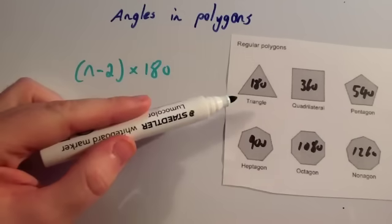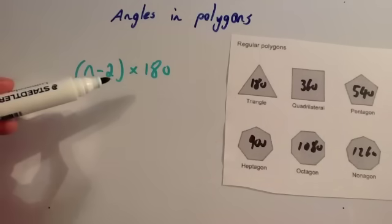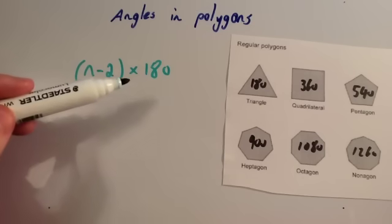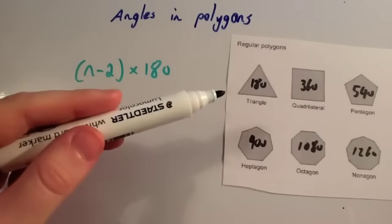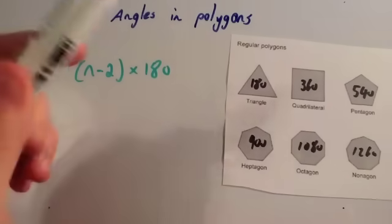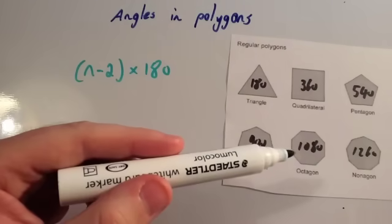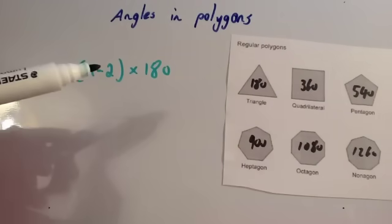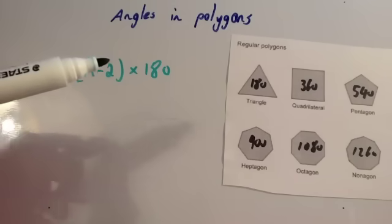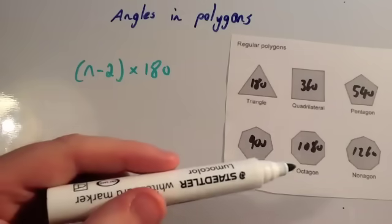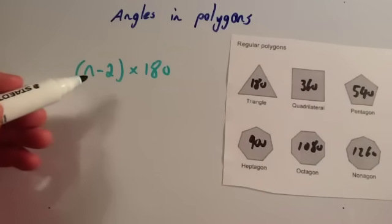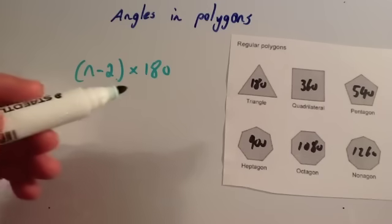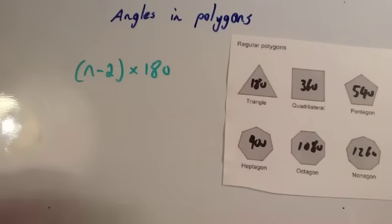For a triangle, it's got 3 sides. You take away 2, giving 1, and then times by 180, which is 180. So the angles in a triangle add up to 180. For an octagon with 8 sides, 8 take away 2 is 6, and 6 times 180 is 1,080. If you had a 100-sided shape, you do 100 take away 2 is 98, times 180, and that would tell you what all the angles inside add up to. So this formula is quite useful.